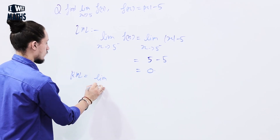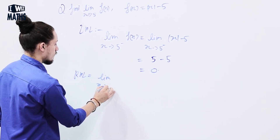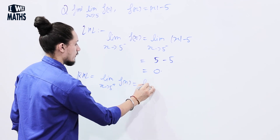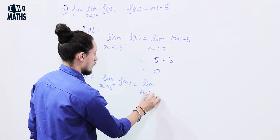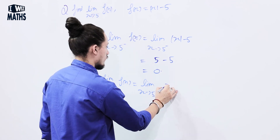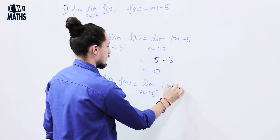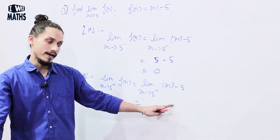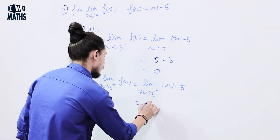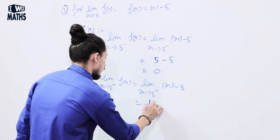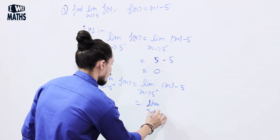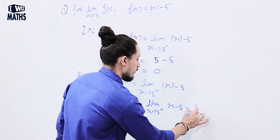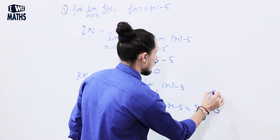For right hand limit: lim (x → 5⁺) of |x - 5|. Since x > 5 here, |x - 5| = x - 5. So the limit = 5 - 5 = 0.